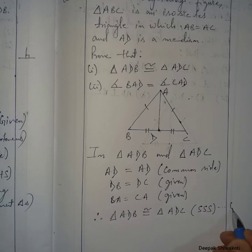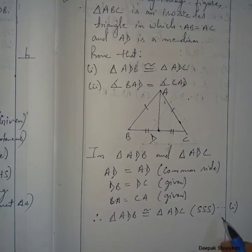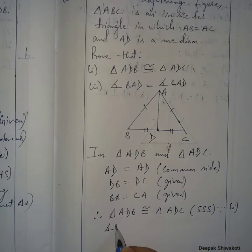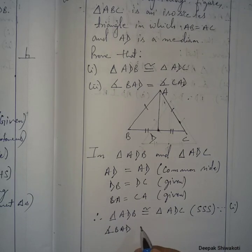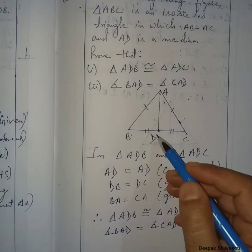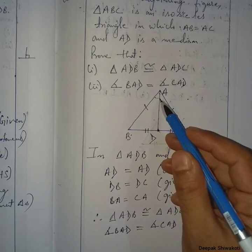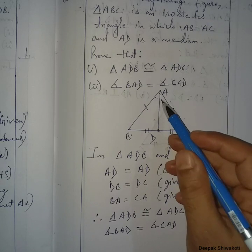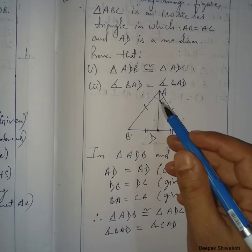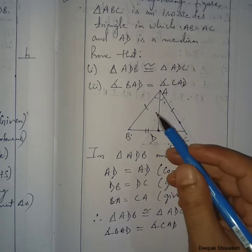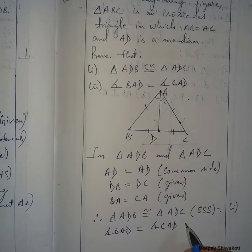That is number one, which we had to prove, and we have proved it. Next, angle BAD equals angle CAD. These two angles are equal because they are corresponding angles of congruent triangles.